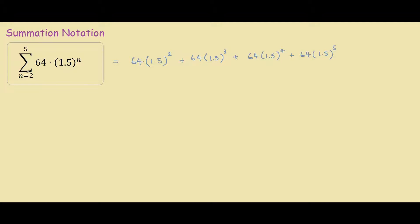So this big E over here is actually called sigma, and it's a Greek letter. This is the lowercase and this is the uppercase sigma. This n equals 2 means that the sequence starts from 2 and goes to 5.